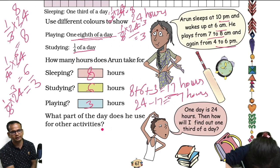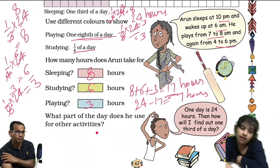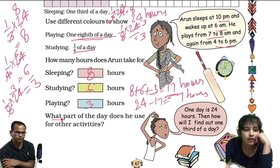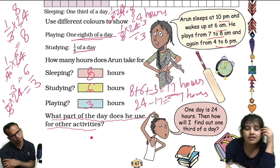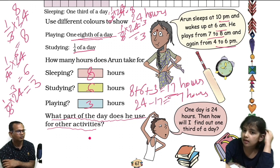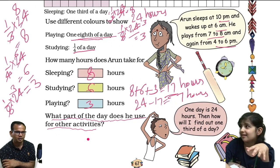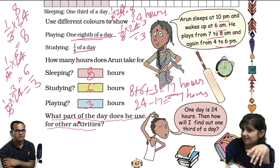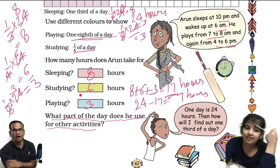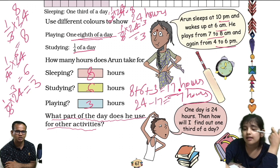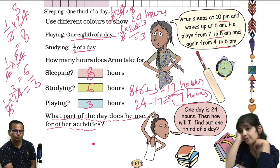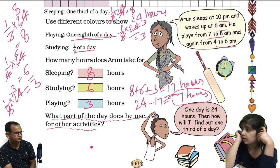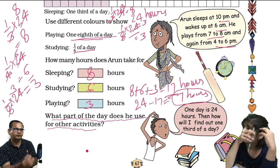So for what part of the day does Arun use for other activities? He's asking: what part of the day? We have calculated 7 hours for other activities. In one day we have 24 hours, and he uses 7 hours for other activities. So the answer is 7 by 24 — that is, seven twenty-fourths of the day.